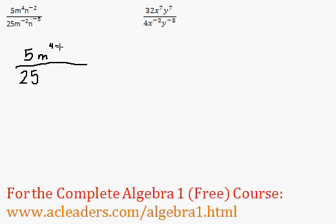So we have m to the 4 minus negative 2. And the n's, we have n to the negative 2 minus negative 5, because we had negative 5 down below. That was an ugly n.